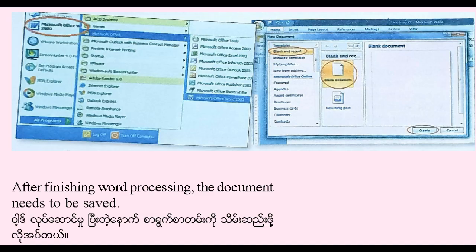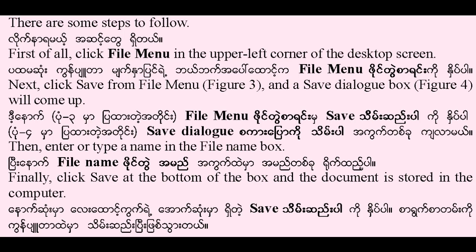After finishing word processing, the document needs to be saved. There are some steps to follow. First of all, click File menu in the upper left corner of the desktop screen. Next, click Save from File menu (figure 3) and a save dialog box (figure 4) will come up. Then, enter or type a name in the File Name box. Finally, click Save at the bottom of the box and the document is stored in the computer.